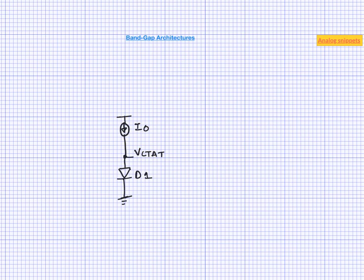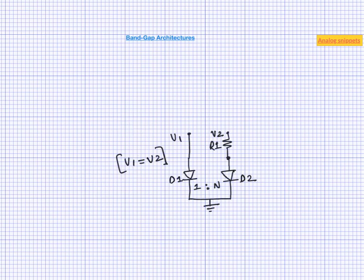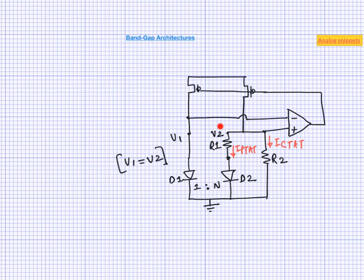Starting again: we have a diode biased by a constant current — the voltage across this diode is CTAT. If we place a resistor in parallel with this diode, the voltage across the resistor is also CTAT, and if the resistor doesn't change with temperature, the current through it is a CTAT current. Now putting everything together: we start with our familiar structure to generate the PTAT current, and add another resistor across this structure. The branch with R1 carries PTAT current and the branch with R2 carries CTAT current. By choosing R1 and R2 correctly, we can make the total current temperature-independent.